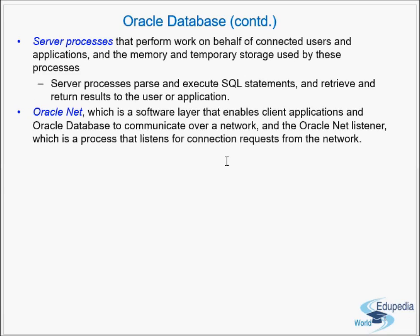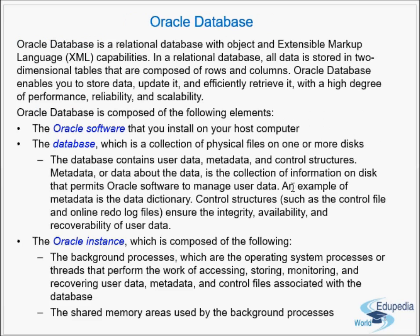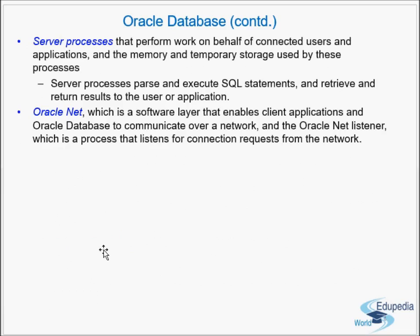Oracle Net is a software layer that enables client applications and Oracle database to communicate over a network. The Oracle Net Listener is the process that listens for connection requests from the network. This listener process belongs to Oracle Net. The Oracle database and instance have a listener that listens for connections from the network.